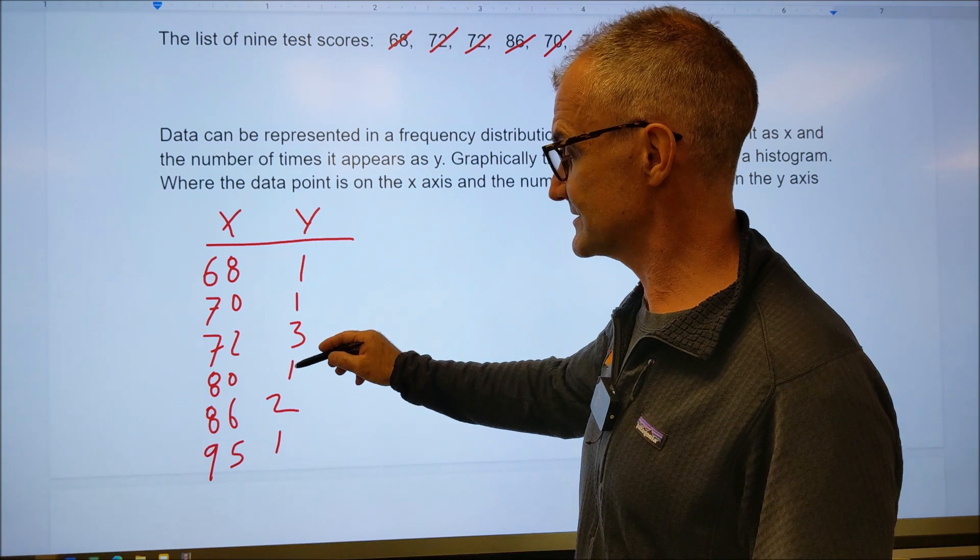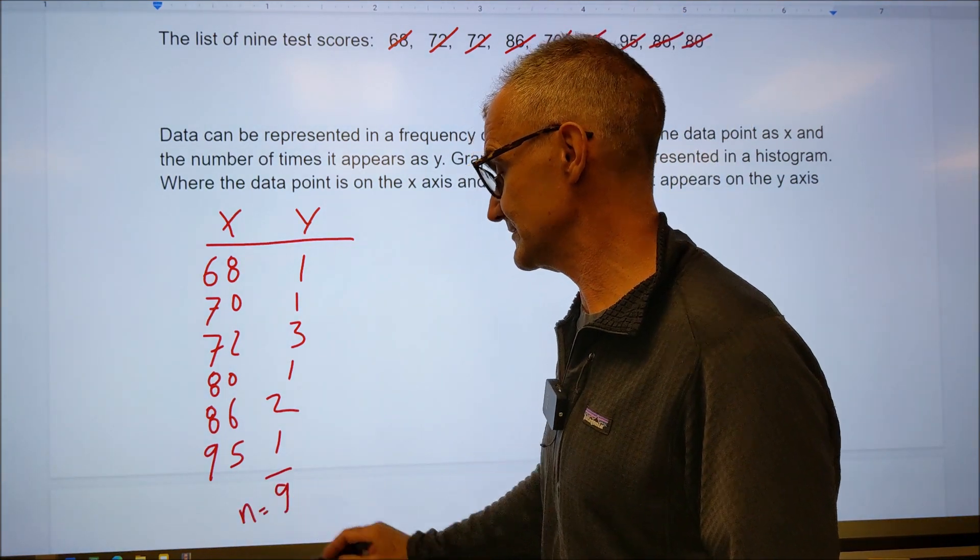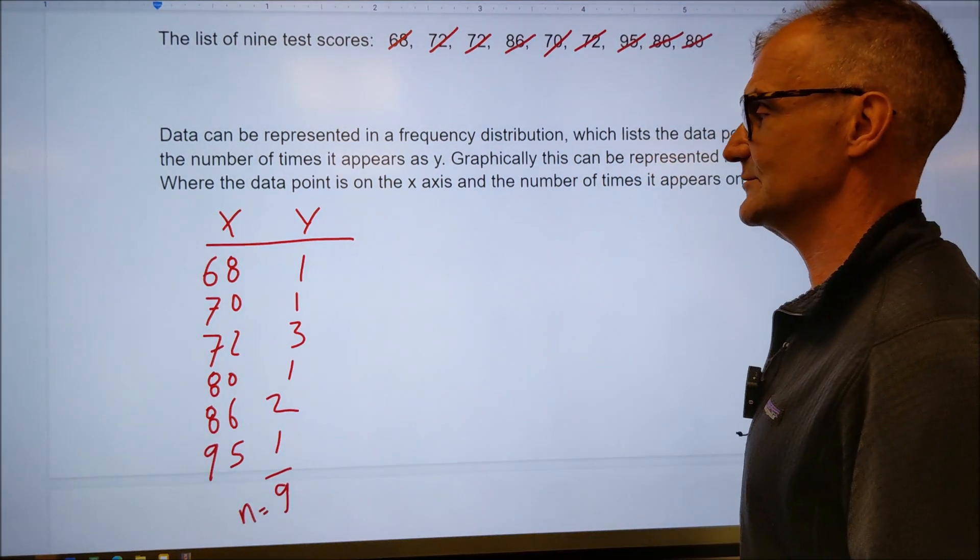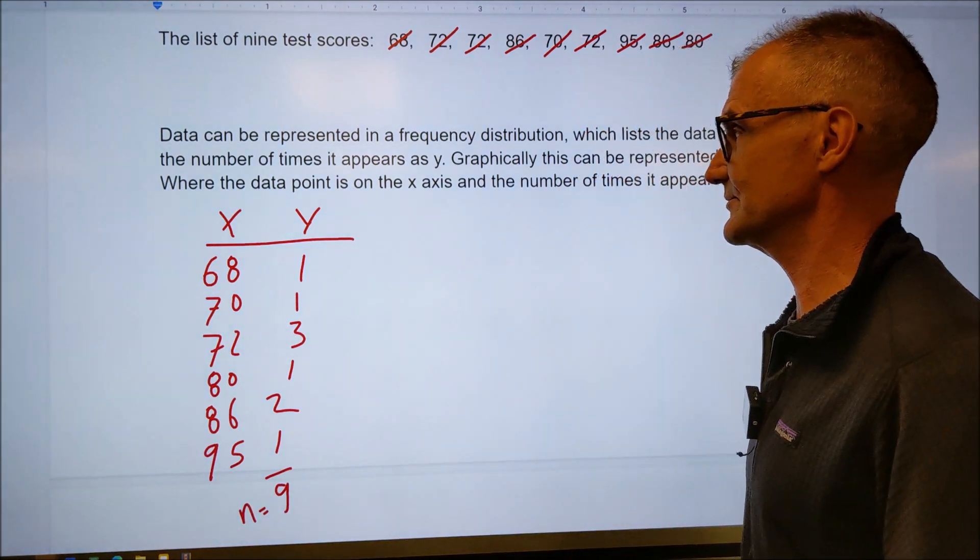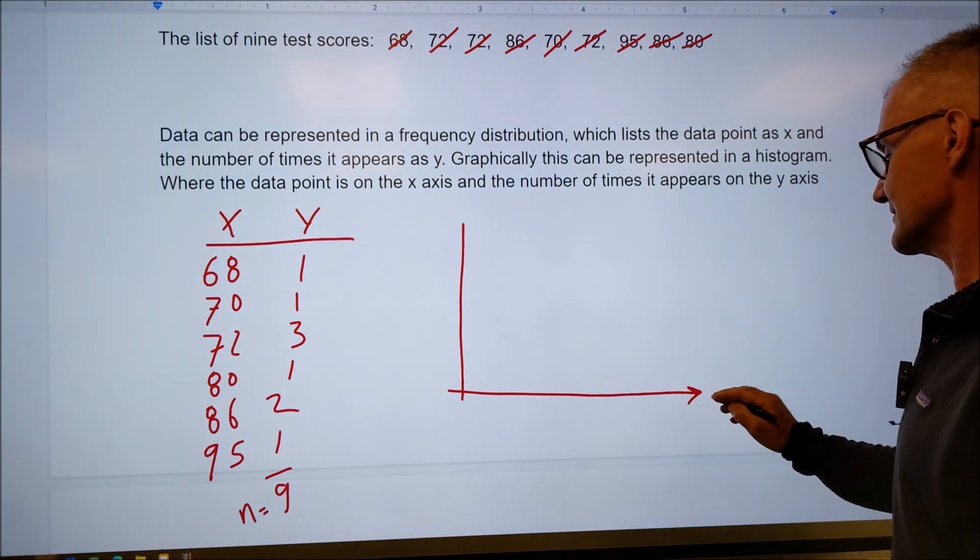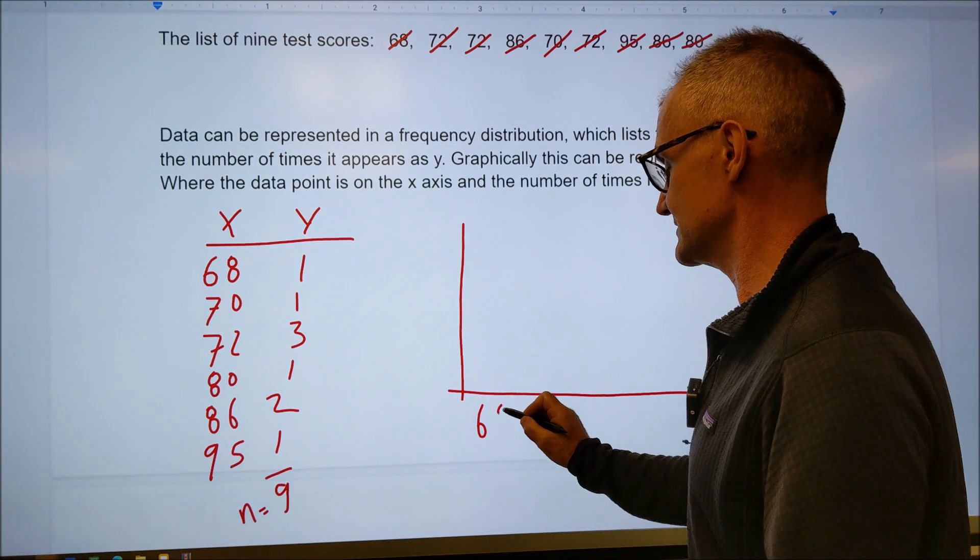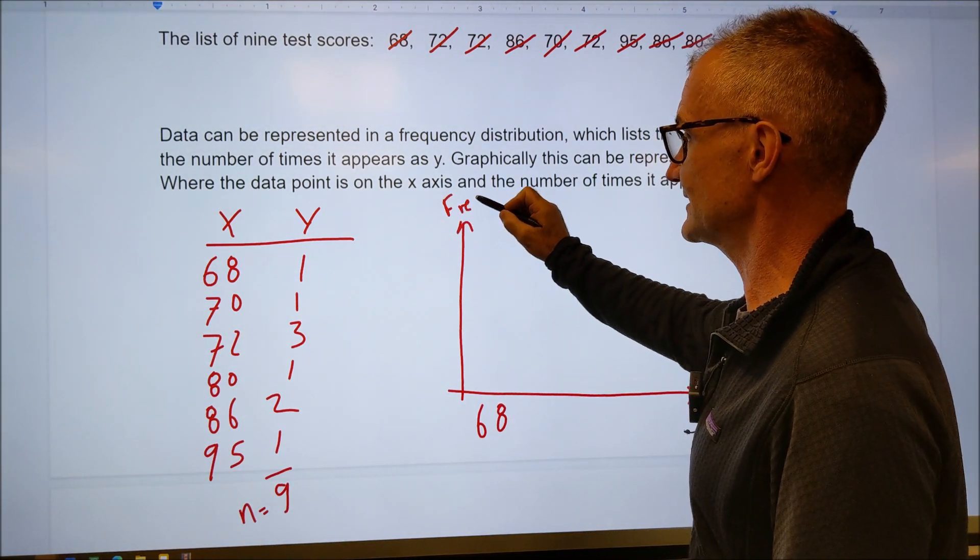I could double check that by adding up the number of values I have. One, two, five, six, eight, nine. And again, n is equal to nine, meaning there are nine values. So I have them all represented. So again, that's what a frequency distribution is, where x is the value and y is how often it occurs. A histogram is you're just actually graphing that table where your horizontal axis is going to be x, the actual value. So 68. It's really just a bar graph. Y is frequency or how often that occurs.